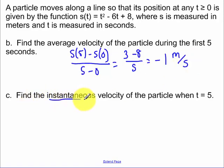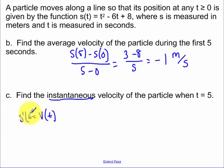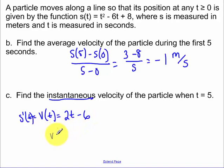Instantaneous means derivative, so our velocity function — the derivative of our position function — is equal to 2t minus 6. Evaluating at t equals five: v(5) simplifies to four meters per second.